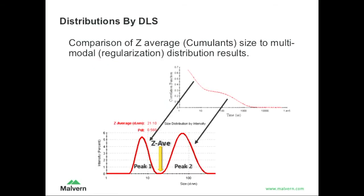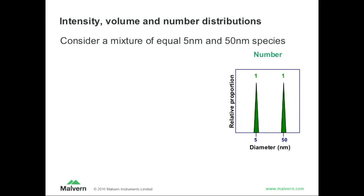In real life things are not that easy — you may actually see two or more decays, and then just getting one average size out of it, like the z-average shown in yellow, is maybe not the perfect way to look at it. Instead you get a whole distribution, so maybe something of 20 or 10 nanometers and 100 nanometers in this case. When we talk about distribution, something that's really difficult to understand for newcomers to light scattering is the idea that there are different ways of describing a distribution.